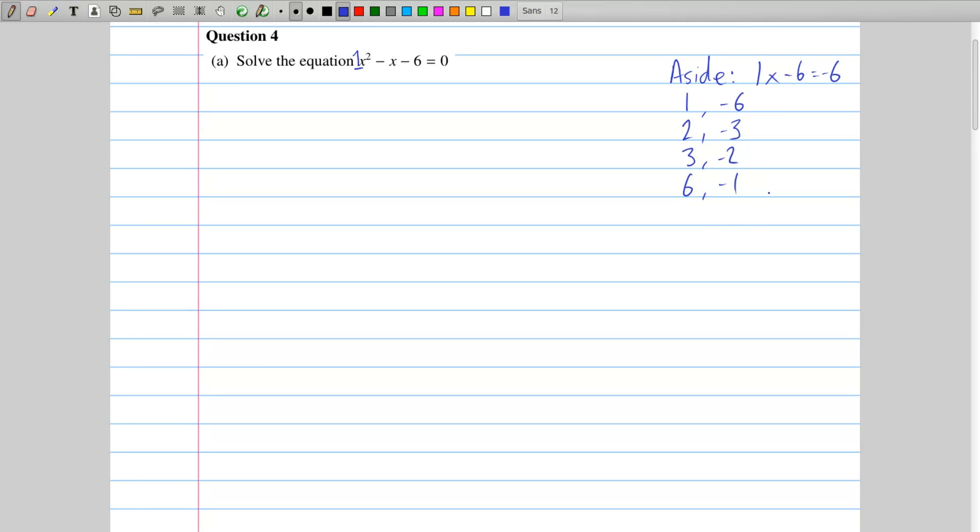Now, why do I do this? Well, I'm looking for something in particular. I want a particular pair of factors to add to the coefficient of x, which in this case is a minus 1. So I add up each pair, and if I add 2 and minus 3, there's a minus 1. And that's what I'm looking for.